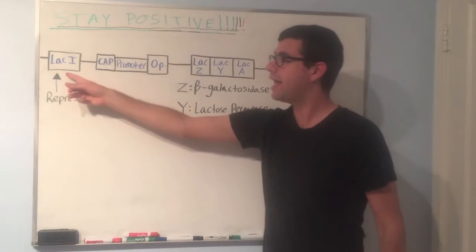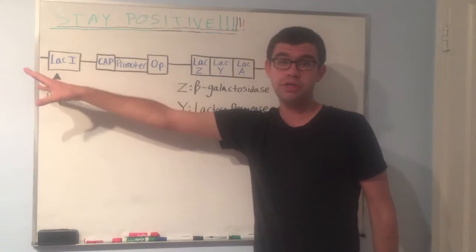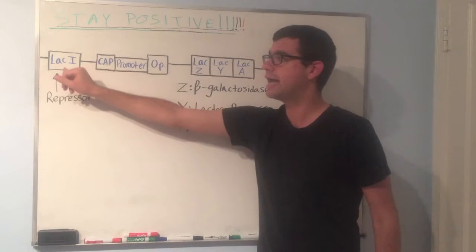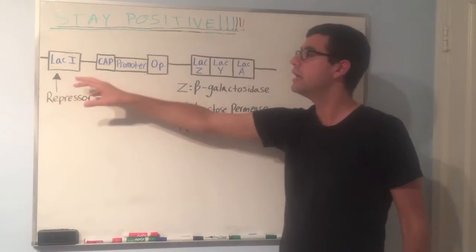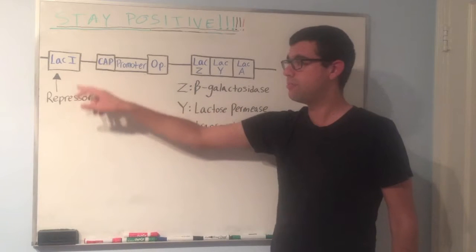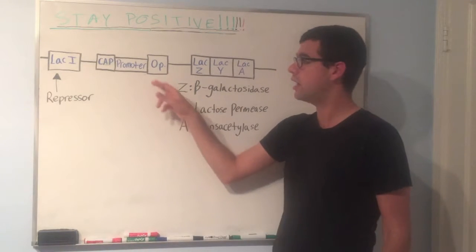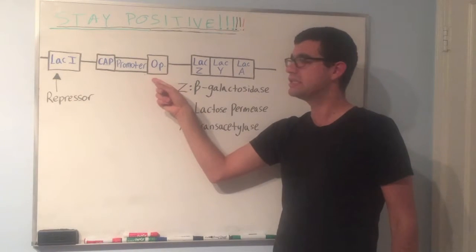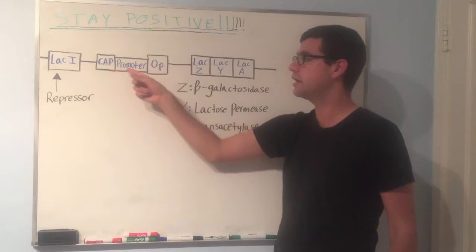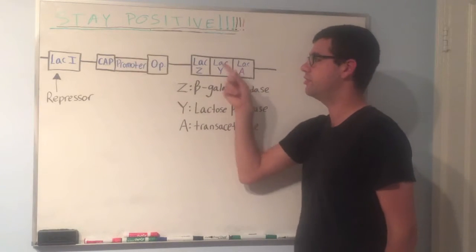So just to review, LAC-I has its own promoter region. This isn't the promoter for LAC-I. LAC-I has its own promoter. It is constantly being expressed. So the repressor is constantly floating around and constantly stuck to the operator, preventing the RNA polymerase from transcribing these.